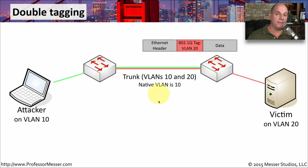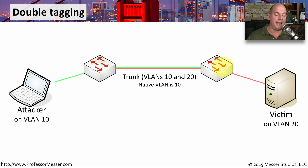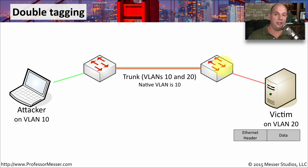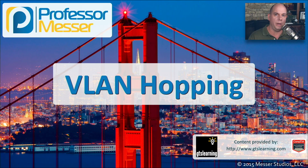The switch then sends this traffic across the network as VLAN 10. On the other side, the second switch receives this, sees there is a tag for VLAN 20, removes the tag, and forwards that information to the destination — our victim machine on VLAN 20. By adding that extra tag in the middle and taking advantage of the native VLAN, the attacker is able to jump between VLAN 10 and VLAN 20.